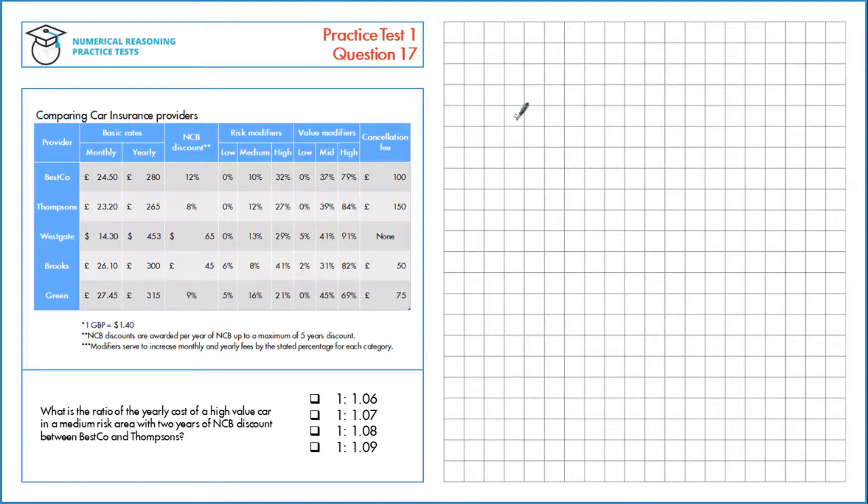What is the ratio of the yearly cost of a high value car in a medium risk area with two years of no claims bonus discount between Besco and Thompsons?